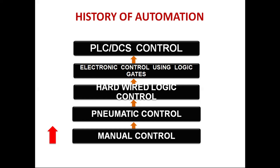After hardware logic control, electronic control using logic gates came, which was also eliminated. Then came PLCs and DCS systems. PLCs and DCS systems are hardware that can be programmed as per our requirement through computer systems, and they have a number of inputs and outputs which can control a large number of signals easily. We will be seeing why PLCs and DCS systems are more reliable than hardware logic control and electronic logic gate systems.